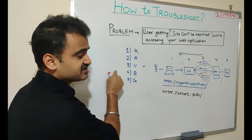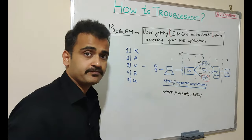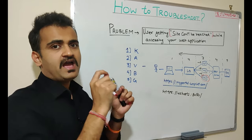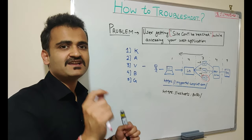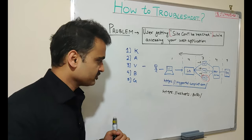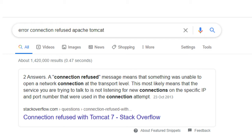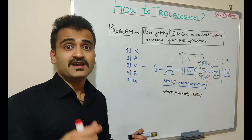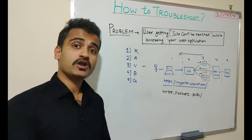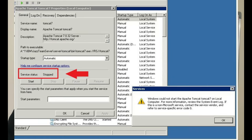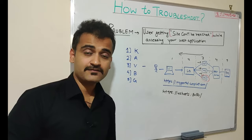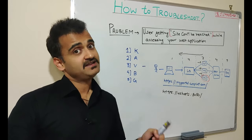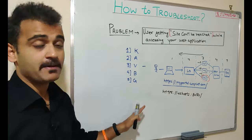You have now completed steps one through four and know exactly where the issue is. Now go directly to step five and Google the specific error — for example, 'connection refused on Apache Tomcat' or 'site cannot be found while accessing Apache Tomcat web server.' The first search result from Stack Overflow suggests you should check whether your Apache Tomcat service is up and running. You log into the server and see that the Apache Tomcat service is in a stopped state. You start the service, hit the URL again, confirm it is working, then validate it by running the load balancer URL. Issue fixed.